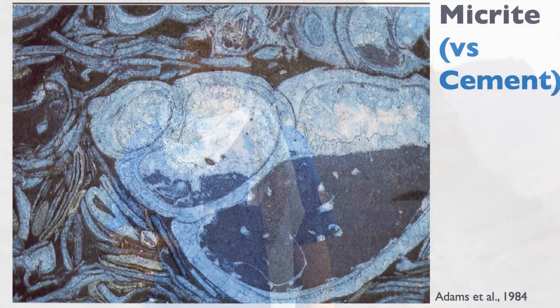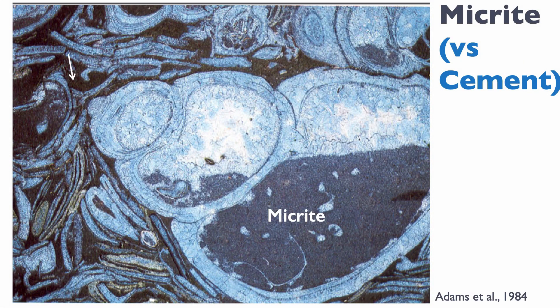Central to the classification is the notion of carbonate mud, or mycrite. Mycrite is a carbonate mud. In this picture here you can see mycrite partially filling a gastropod — that's a geopetal structure — and there's also a white arrow pointing to places where there is mycrite in between the other shell fragments. There are also broken shell fragments. Cement is not mycrite; cement is a diagenetic product that fills void or pore space after deposition, so it's very different from mycrite.